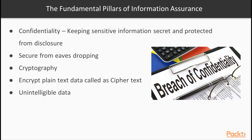Let's start with a review of the fundamentals of information assurance. When we talk about confidentiality, we're talking about keeping data secure from eavesdropping. There are many tools we can use to enable confidentiality of our data, but one of the primary tools is cryptography. We can say that we encrypt plaintext data to create what is known as ciphertext — data that is unintelligible to anyone that doesn't hold the specific key used to decrypt it. Note that even though we employ confidentiality protections, that doesn't mean that our data or our systems are secure.